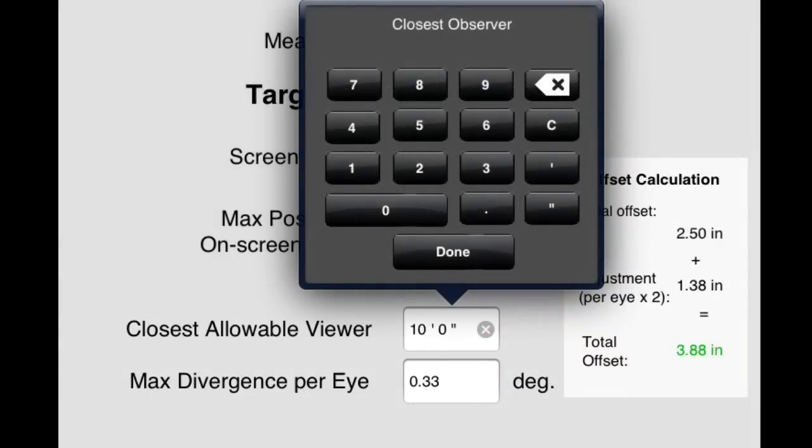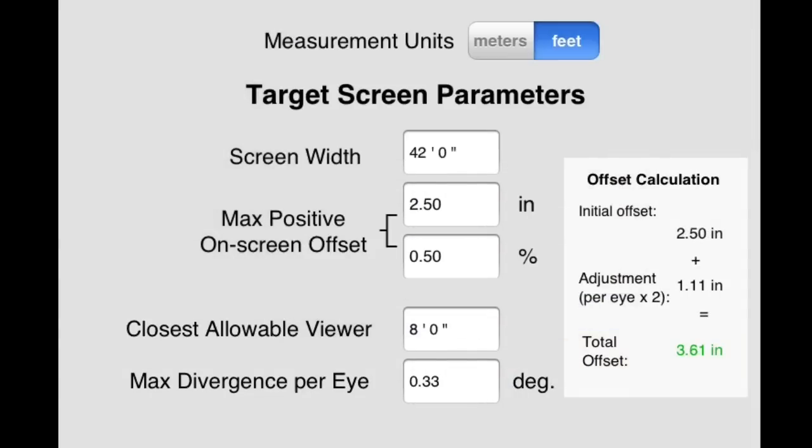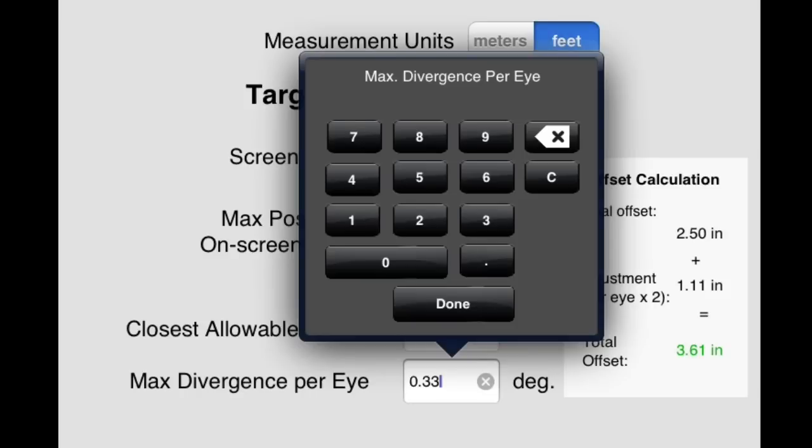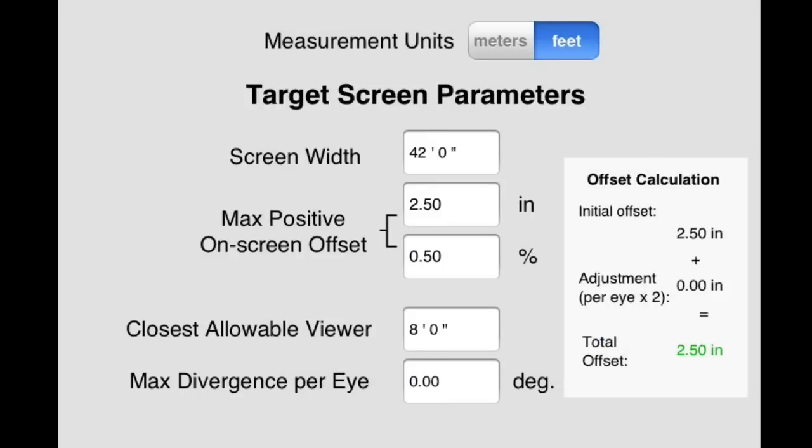As you change the settings in these two values, you will see the total offset change correspondingly. And of course, if you don't want to make use of this feature, then simply set either of these two values to zero and the calculator will ignore them.